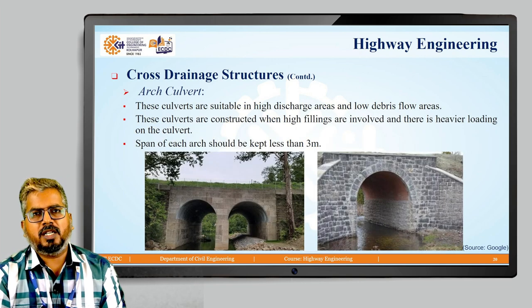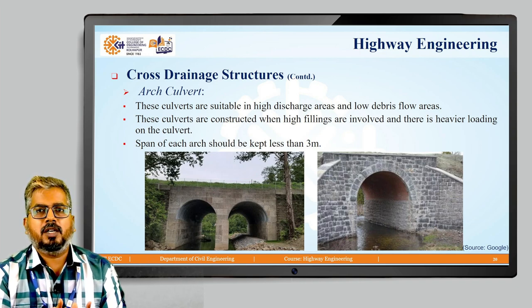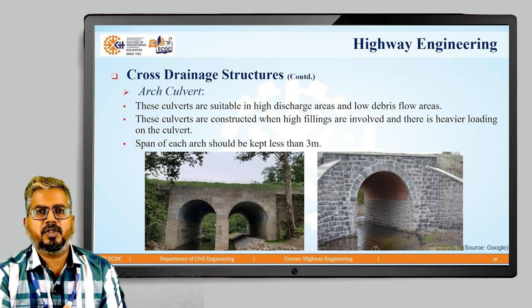The arch culvert is suitable in high drainage areas and low debris flow areas. These culverts are constructed when high fillings are involved and there is heavier loading on the culvert. The span of each arch should be kept less than 3 meters.